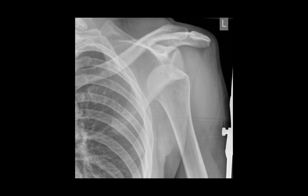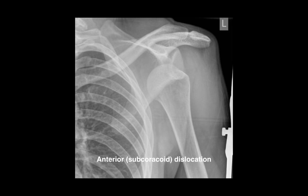This is a dislocated shoulder. We can see the head of the humerus is outside of the glenoid fossa, and it's lying underneath the coracoid process, which projects anteriorly. Therefore, this is an anterior dislocation, also known in this case as a subcoracoid dislocation.